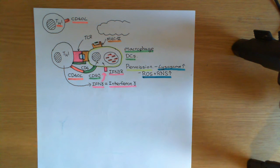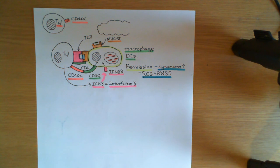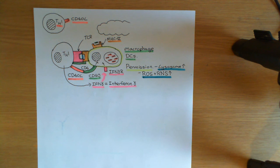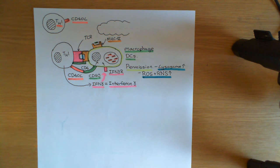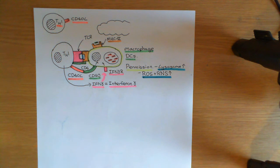This activation is going to work — the mycobacterium tuberculosis population is going to start being brought under control. In the next video, we'll finish this discussion of the adaptive immune response to tuberculosis, discuss how it results in the formation of granulomas, and discuss in detail the difference between a latent TB infection and an active TB infection.